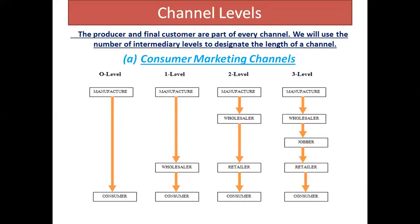Now, the channel levels constituting the consumer marketing channel are further subdivided into four levels: zero level, one level, two level, and three level. Zero level means products are distributed directly to the consumer. In the case of one level: manufacturer to wholesaler, then consumer. In two level: manufacturer to wholesaler, then retailer, then consumer. Finally, three level: manufacturer to wholesaler, to jobbers, to retailer, then to consumer.